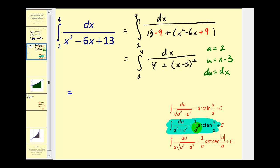So it's going to be equal to 1 over a, or 1 half, times the arctangent of u over a, which is x minus 3 over 2. And we need to evaluate this at the upper and lower limits of integration, which are 4 and 2.